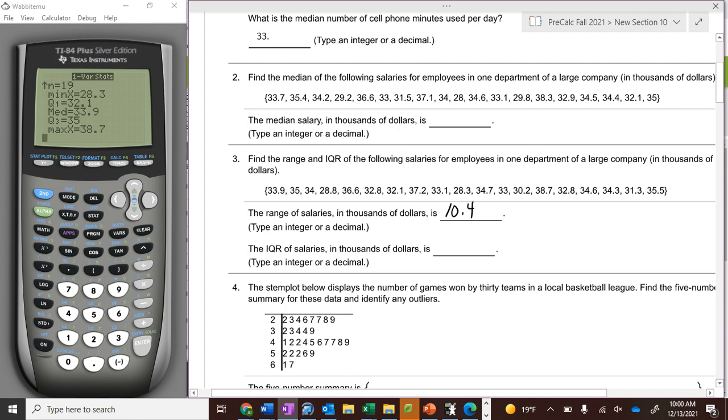The interquartile range of salaries is between quartile three and quartile one. Quartile three is three-fourths of the way up the data if it's sorted in order from least to greatest. Quartile one is one-fourth of the way along the data, just like the median is the middle one. So if you take 35 minus 32.1, you get 2.9. The interquartile range is 2.9.